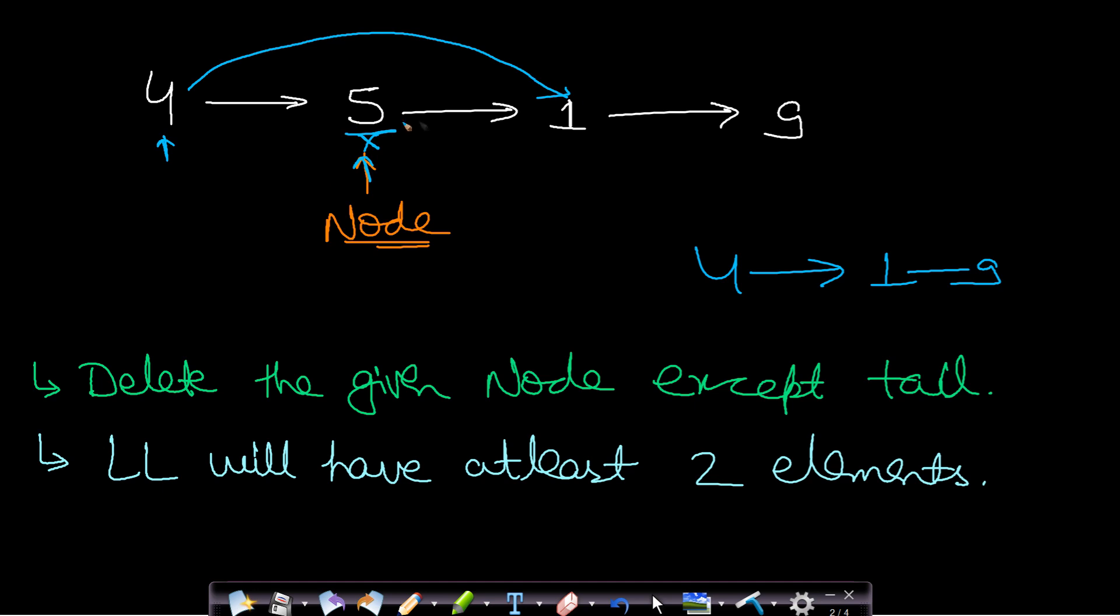And also, this linked list is not holding any special property like it is not a doubly linked list, it is not a XOR linked list, or it is not a circular linked list. So this linked list is just a plain single linked list, and in a plain single linked list, if you are at a current node, you cannot go backwards.